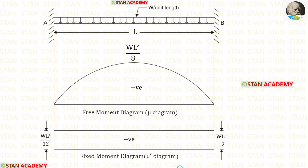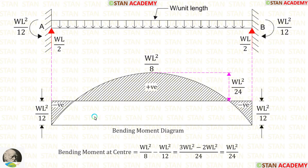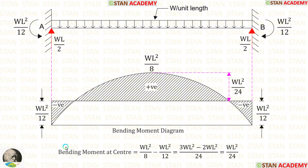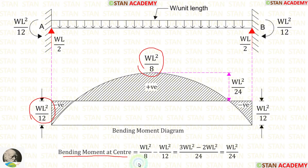Now we are going to draw the bending moment diagram. For that we have to combine the free moment diagram and the fixed moment diagram. Wherever they are acting together we keep the space empty, and wherever they are acting alone without overlapping we mark them. Now let us find the bending moment in the center. For that we have to subtract WL² upon 12 from WL² upon 8, and when we do that we get WL² upon 24.